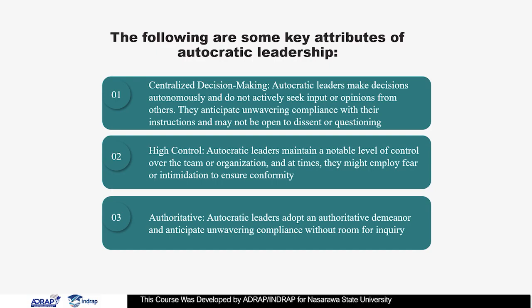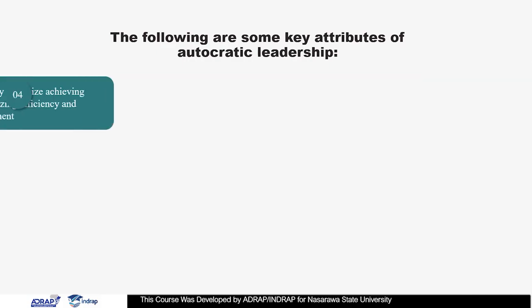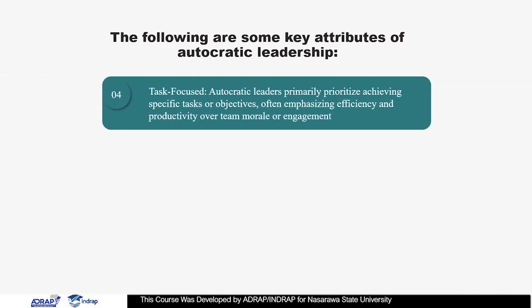Number three, authoritative: autocratic leaders adopt an authoritative demeanor and anticipate unwavering compliance without room for inquiry. Number four, task-focused: autocratic leaders primarily prioritize achieving specific tasks or objectives, often emphasizing efficiency and productivity over team morale or engagement.